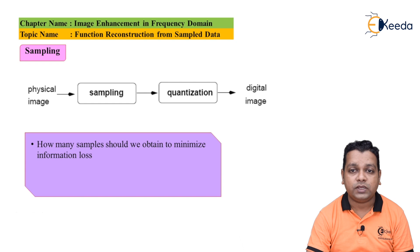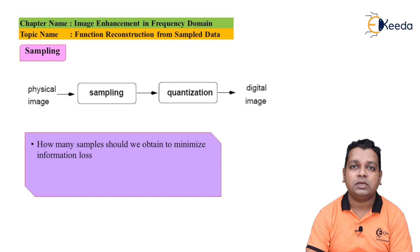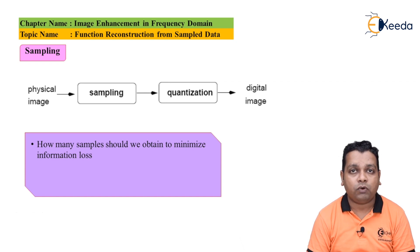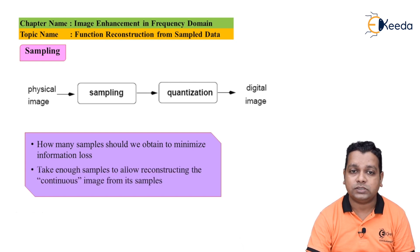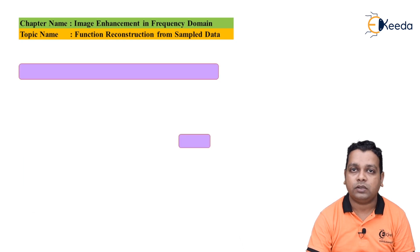How many samples should we obtain to minimize information loss? When converting from a physical image to a digital image, the memory space required for storage should be minimal, yet we want to store as much information as possible. So the key question is: what should the sampling rate be, and how many samples can be obtained with minimum information loss? The solution is to take enough samples so that reconstruction of the signal into continuous form is possible.